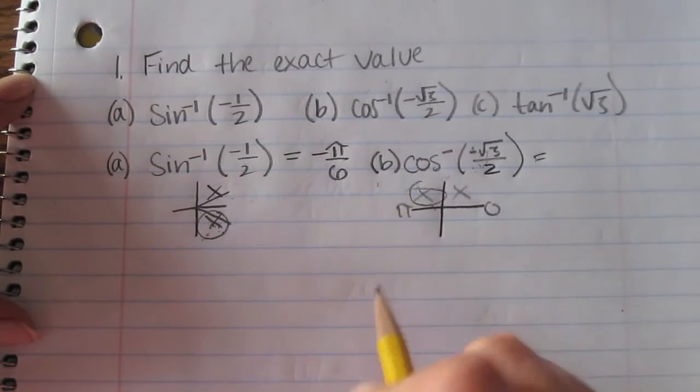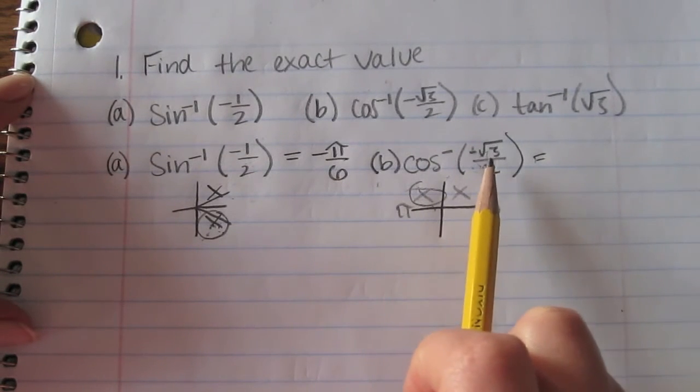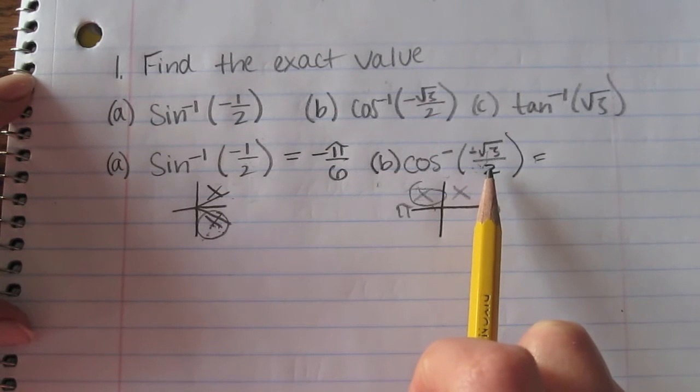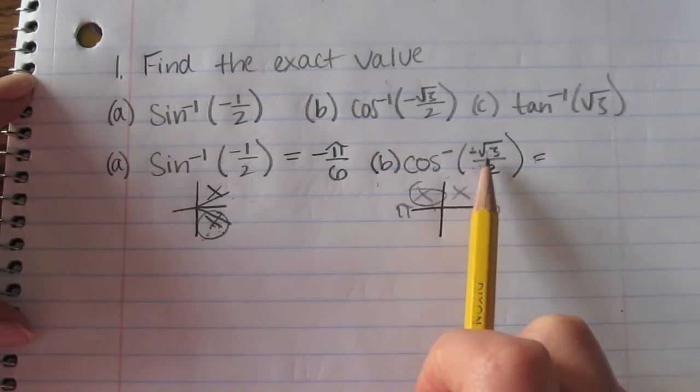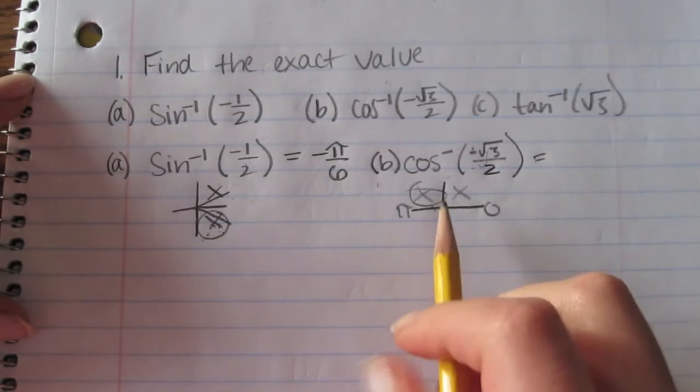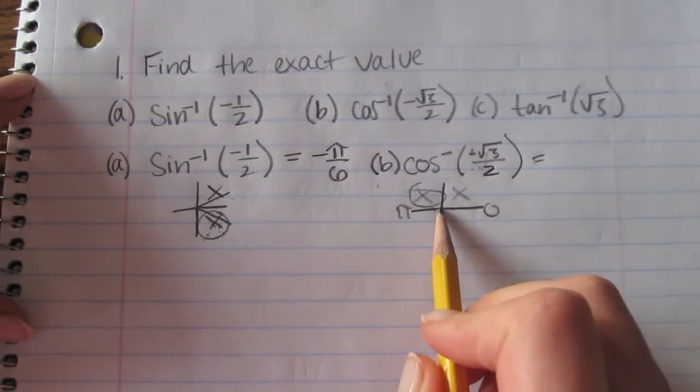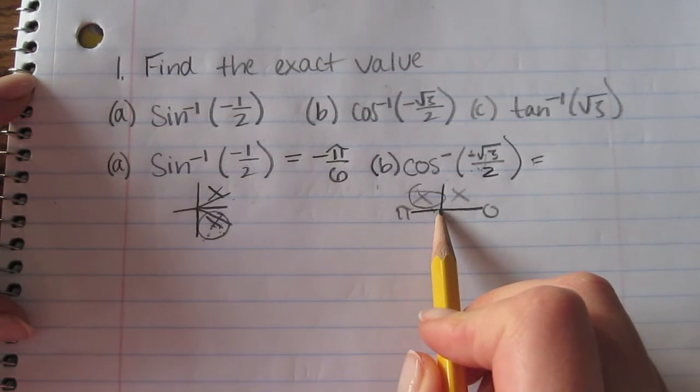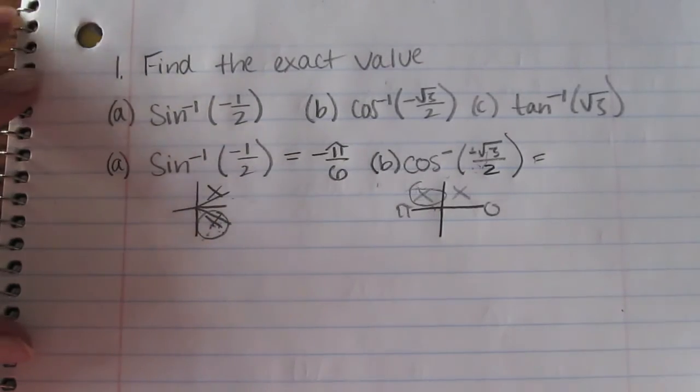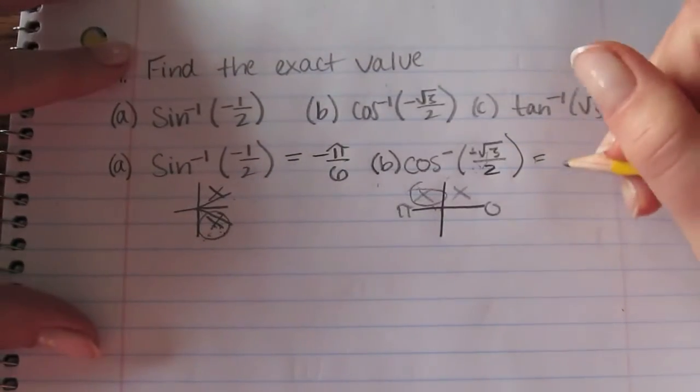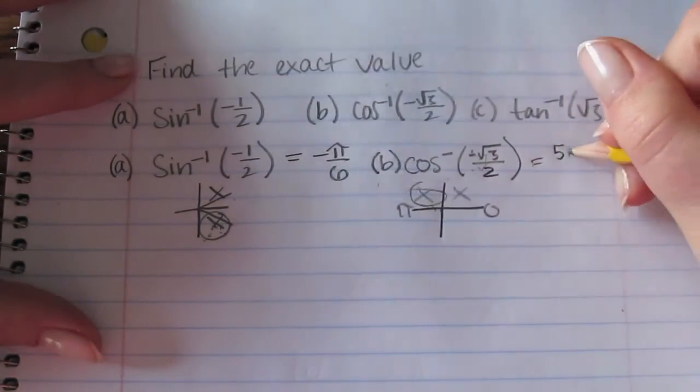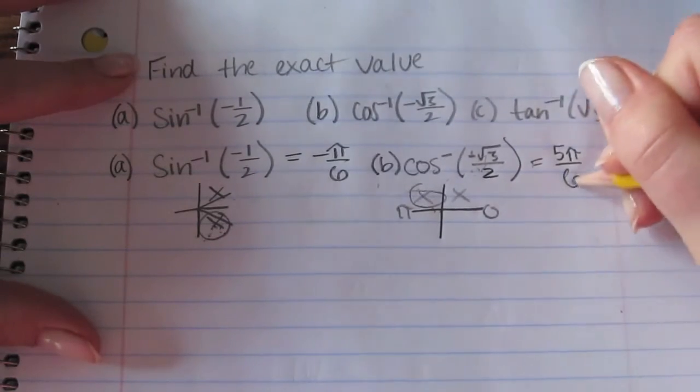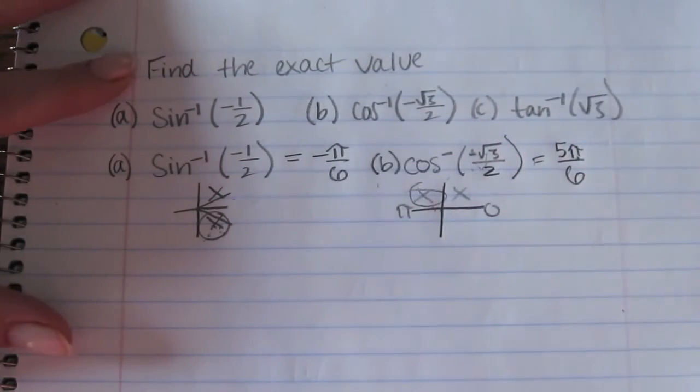Cosine is square root of 3 over 2 at 5π over 6, so the answer would be 5π over 6. That is between 0 and π, so that checks.